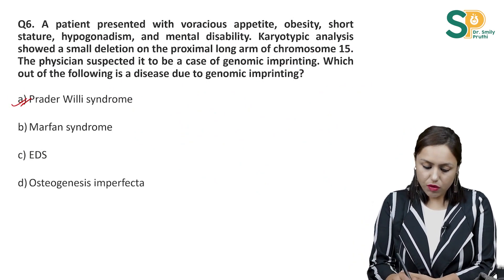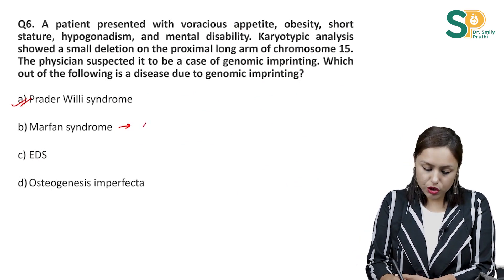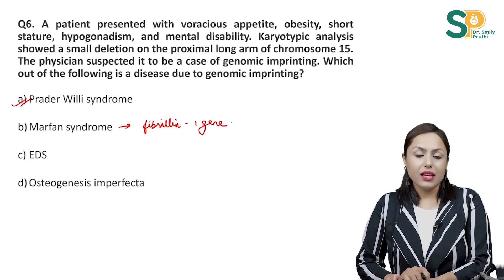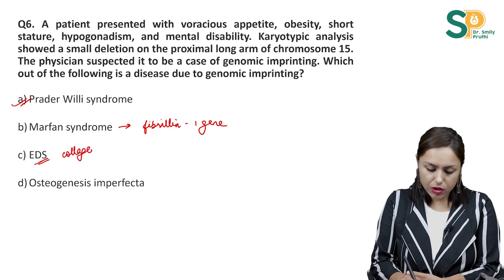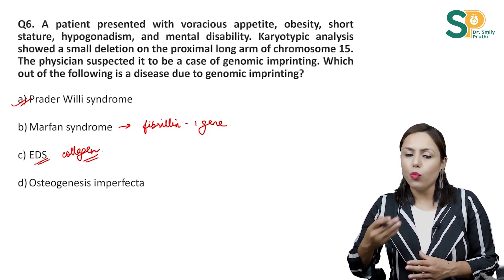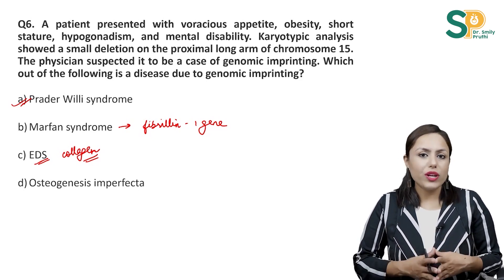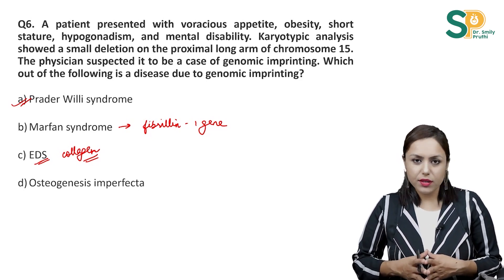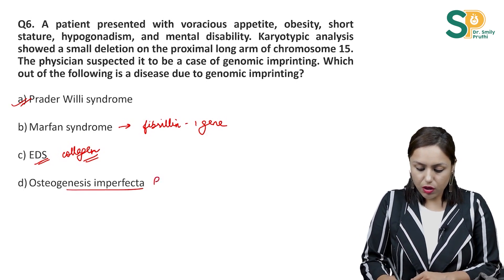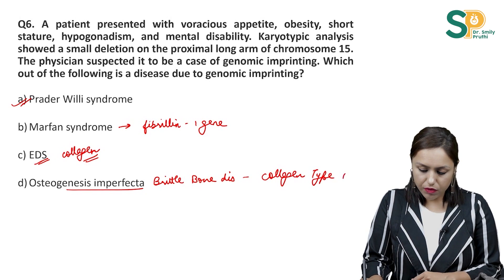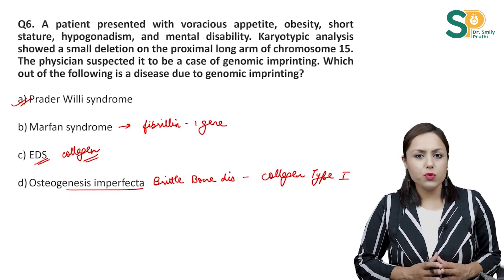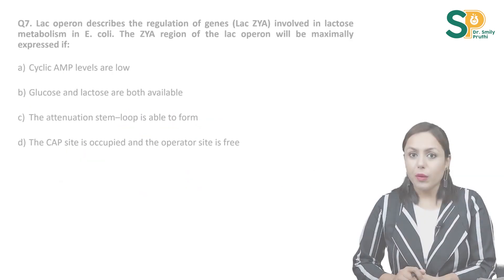What is Marfan syndrome? It is a mutation in the fibrillin-1 gene. What is EDS — Ehlers-Danlos syndrome? It is a defect in collagen, characterized by stretchy skin and loose joints. Then osteogenesis imperfecta, or brittle bone disease, is a defect in collagen type 1. So here our answer is Prader-Willi syndrome.